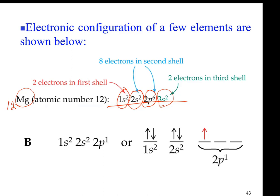Another way of showing electron configuration is to draw a line for each orbital — this is called box notation. For 1s, I show a line with two electrons: one up and one down. This shows the electrons are paired. Electrons have a spin — they can spin around their axis clockwise or counterclockwise. Paired electrons have opposite spin, meaning they spin in opposite directions around their axis.